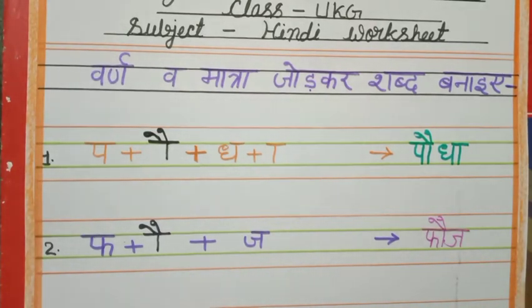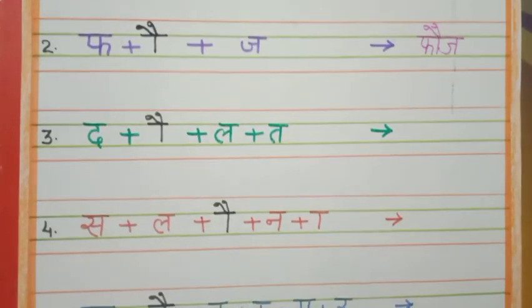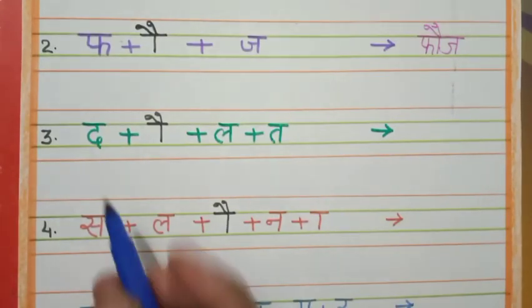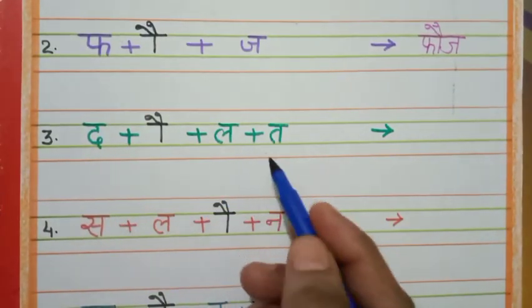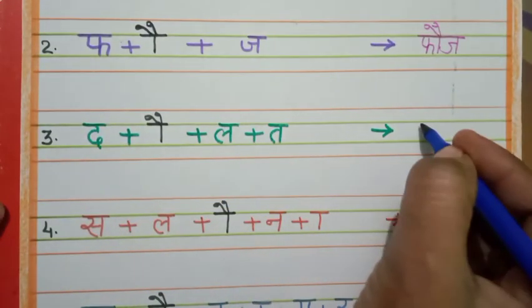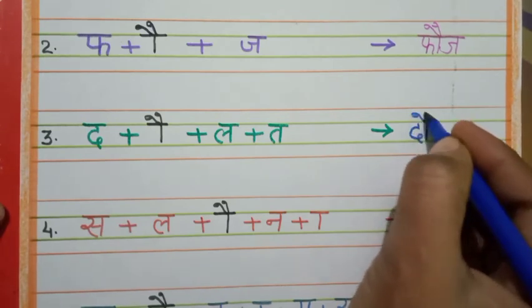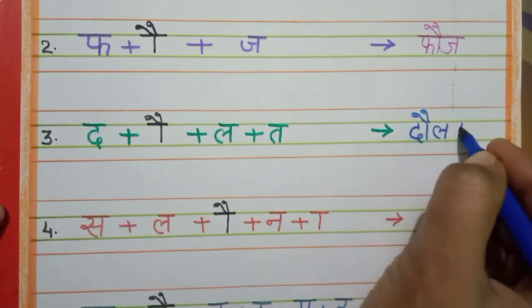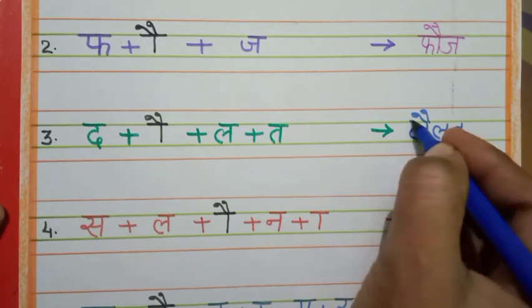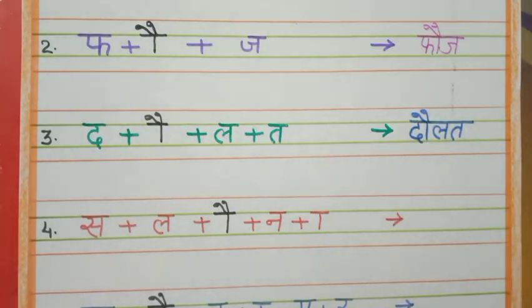Next, dekhiye. Da, auki matra, la, t — do lat. Da, auki matra, la, t — do lat. Ok?